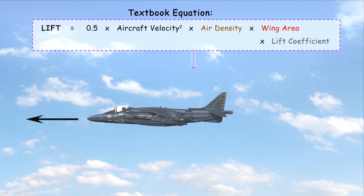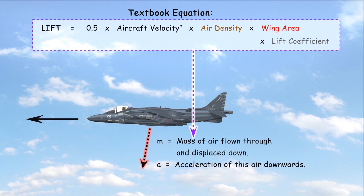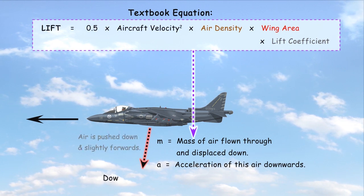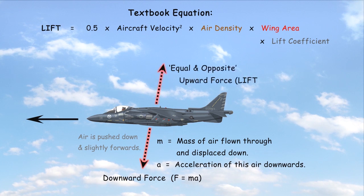All these factors also affect the amount of air displaced down by the wings and how fast the wings accelerate this air downwards. To create a downward force, the equal and opposite force pushes the airplane up.